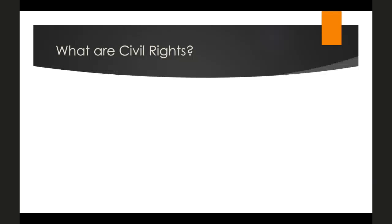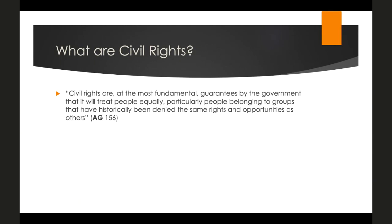Civil rights are different from civil liberties. As your textbook describes, civil rights are guarantees by the government that it will treat people equally — particularly people belonging to groups that have historically been denied the same rights and opportunities as others. While civil liberties are universal protections individuals have against government intrusion, civil rights deal more with whether the law treats all people equally and whether all people gain the same protections of the law.